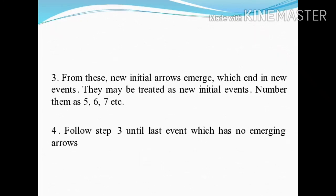They may be treated as new initial events. The third step is that from these new initial events, arrows emerge which end in new events. They may be treated as new initial events and numbered 5, 6, 7, etc. Follow step 3 until the last event, which has no emerging arrows.